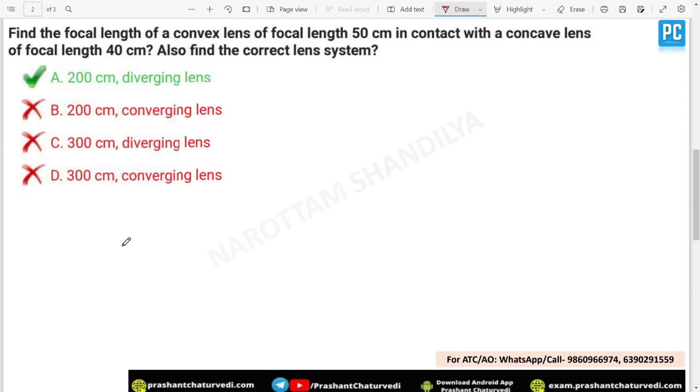When you calculate the equivalent power or equivalent focal length, then it is somewhat different. But here, they had told both the lenses are in contact and both are of different nature. If both are in contact, then the distance between both the lens will become 0.